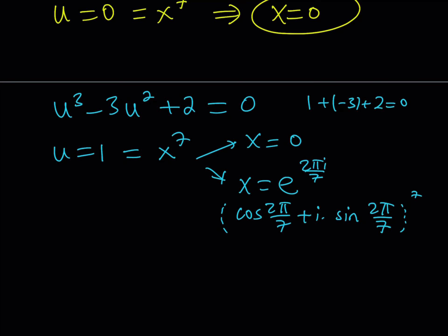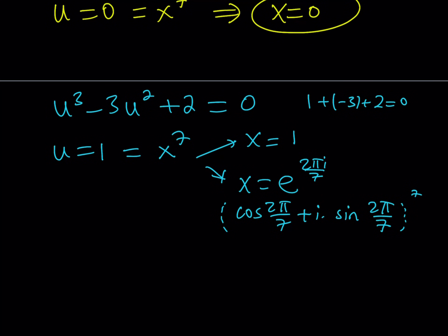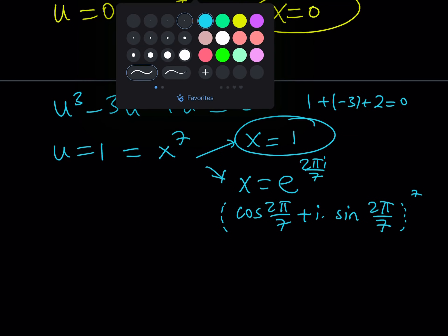Since we're focusing more on the real solutions, x equals 1 is definitely a real solution here. We're not done yet because we do have a cubic: u cubed minus 3u squared plus 2 equals 0. We know that u equals 1 is a root, so we can go ahead and factor it. You could use long division or synthetic division, but I'm going to show you a much cooler way to approach this problem that we've used in other videos.